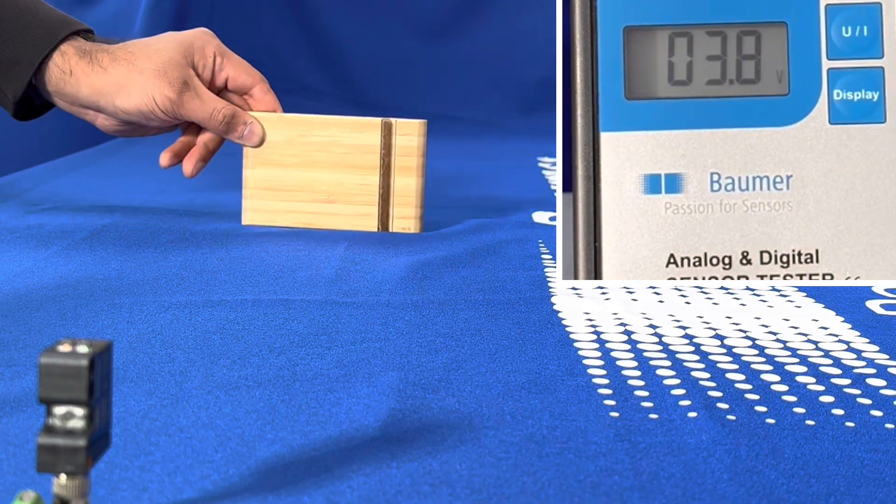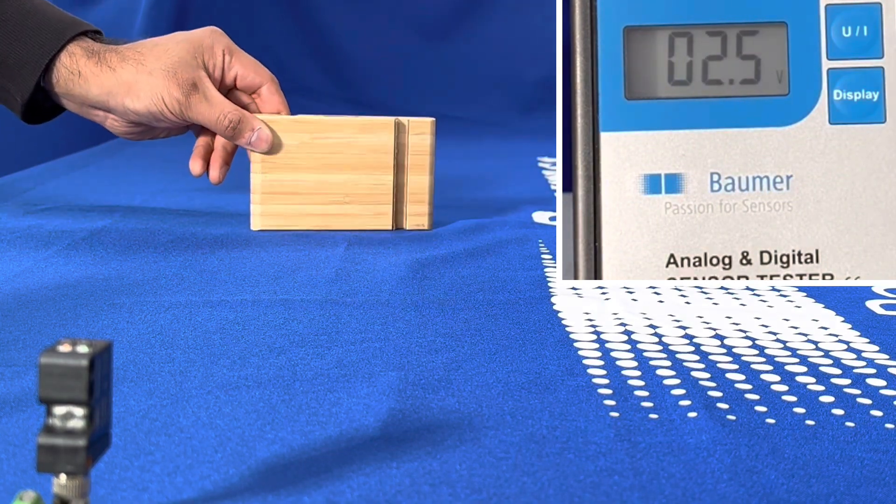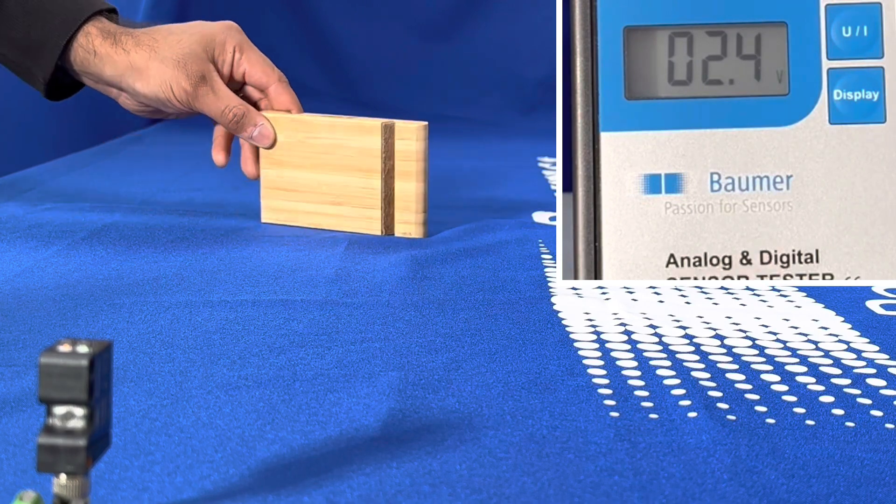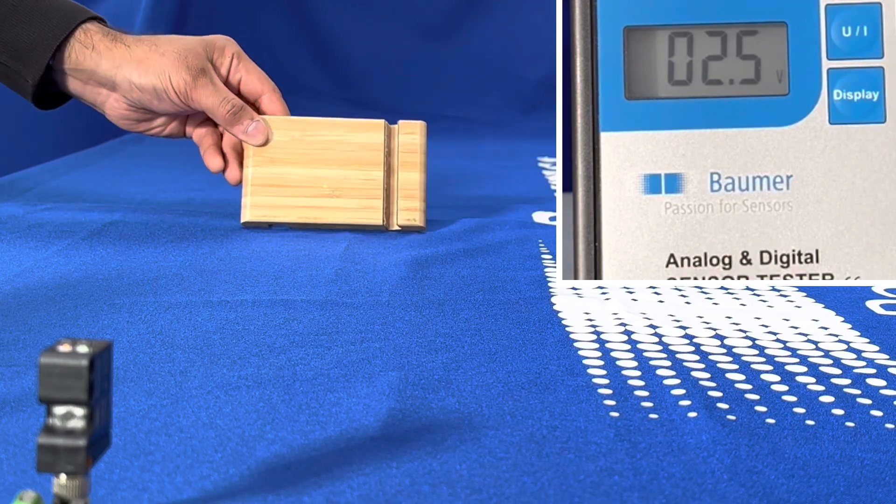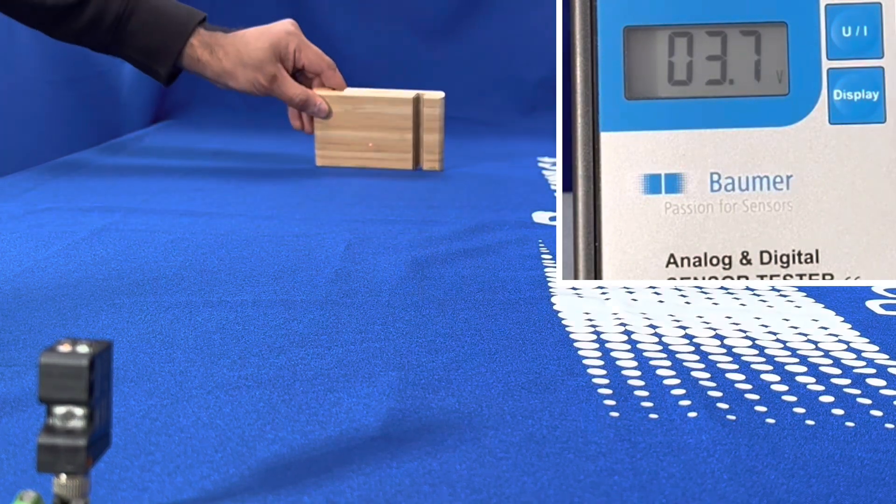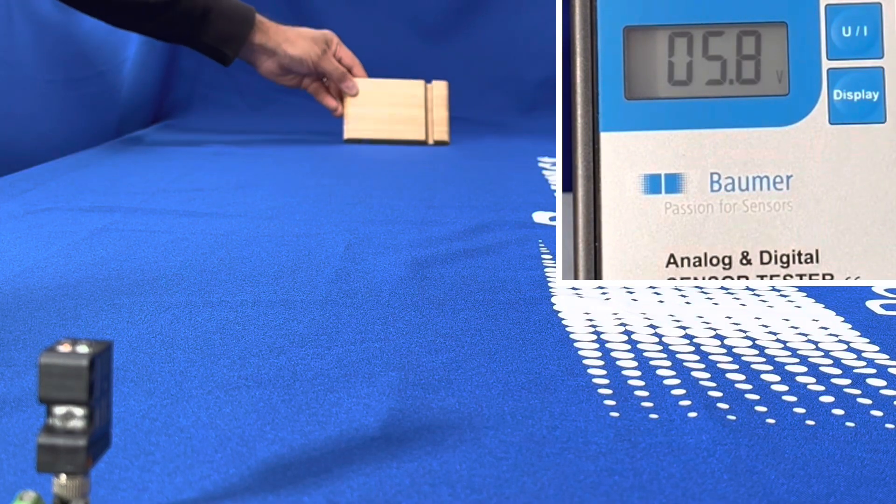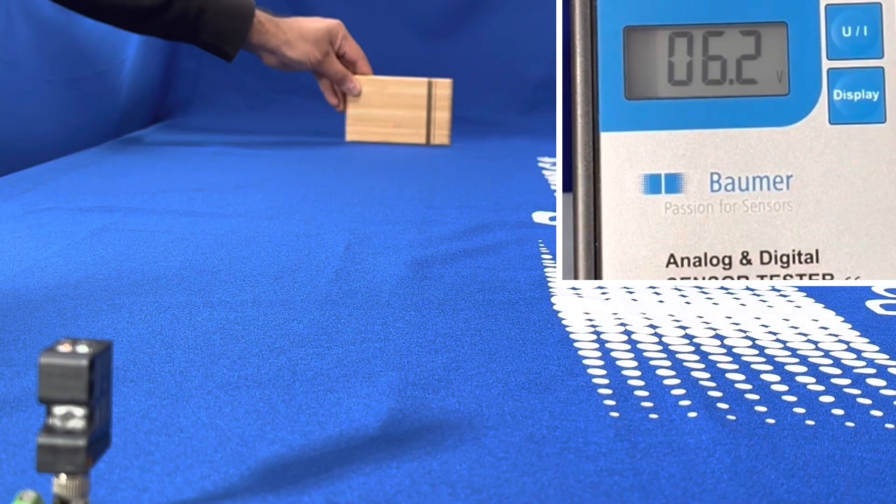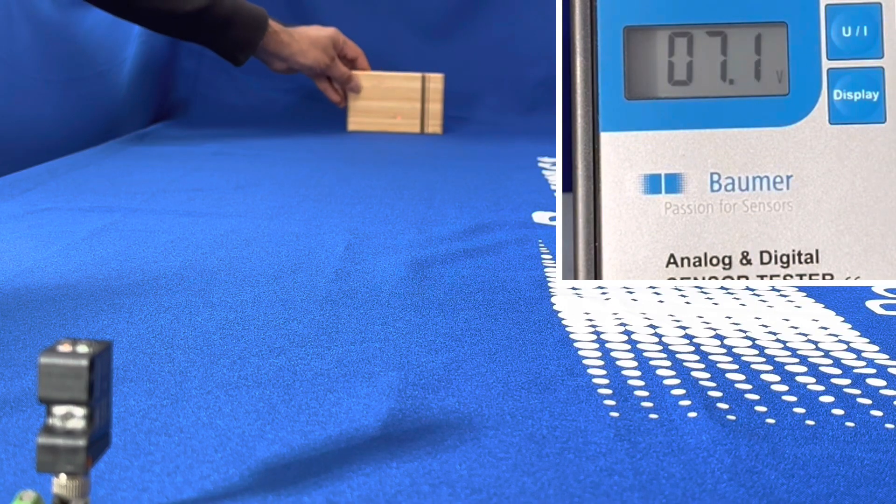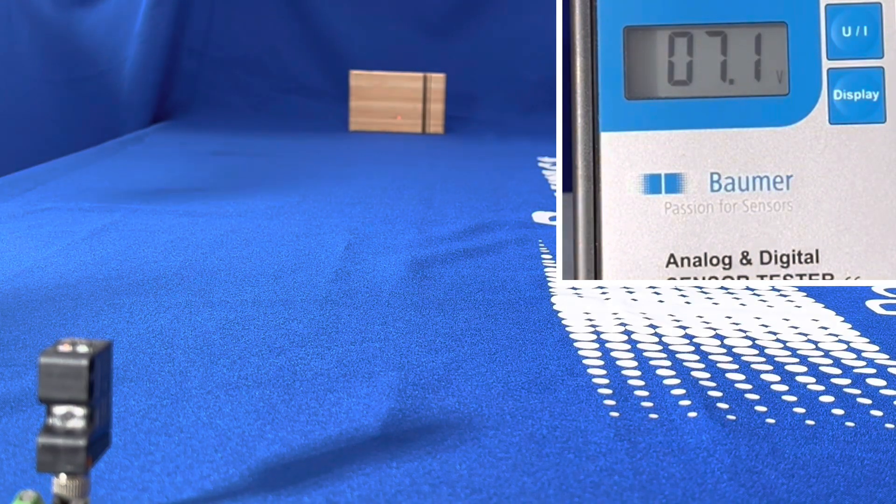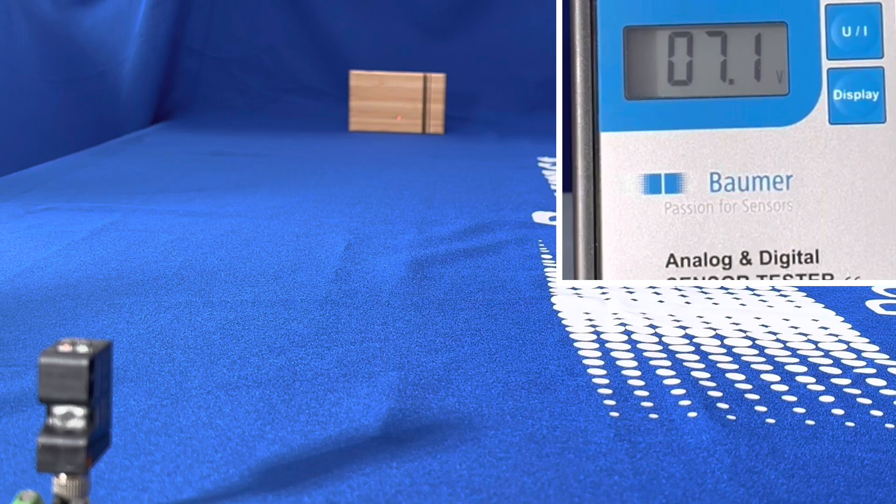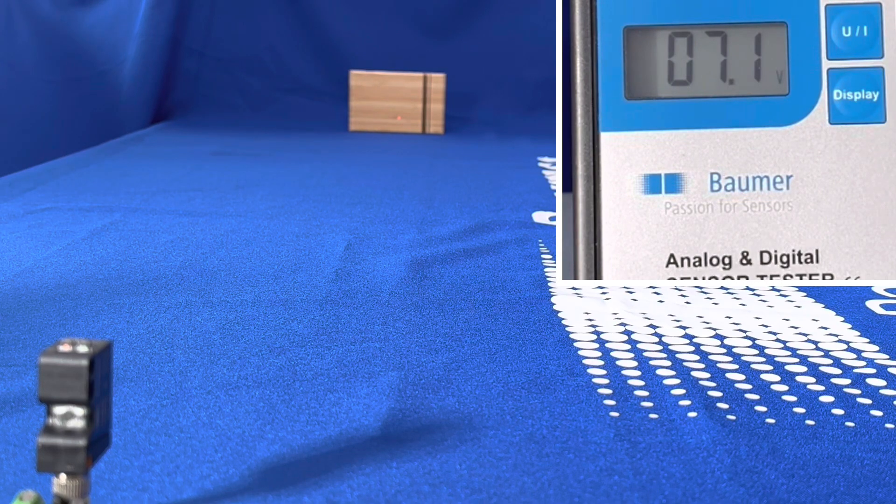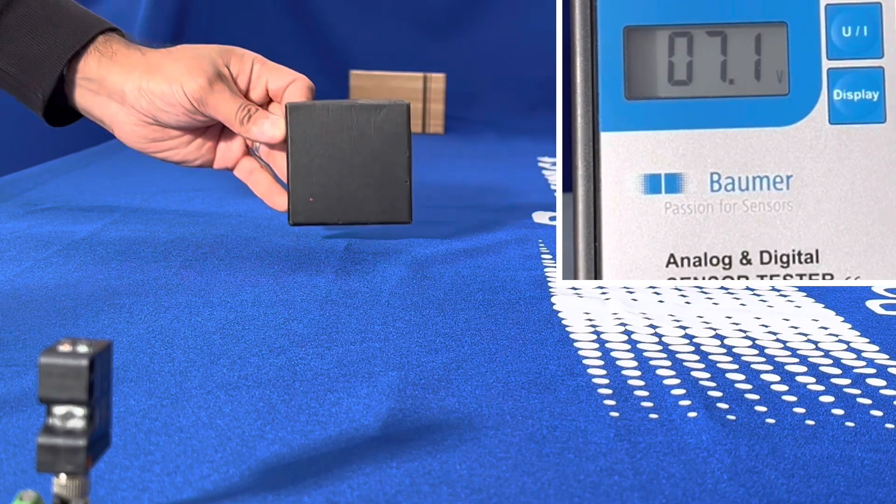It can deal with some angle change, no problem at all, with a fairly stable output. Now if I put something dark in front of the sensor as the target instead...